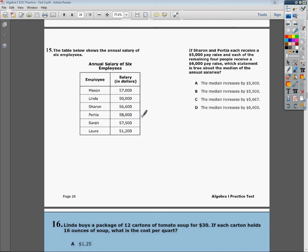$5,000 more than this would take you somewhere in the $63,000 range. And Sharon also got it, so hers goes up to $61,600. Everybody else goes up $6,000, so this one becomes $63,000. Linda's becomes $56,000. Sarah's goes up to $63,500, and then Laura's goes up to $57,200.